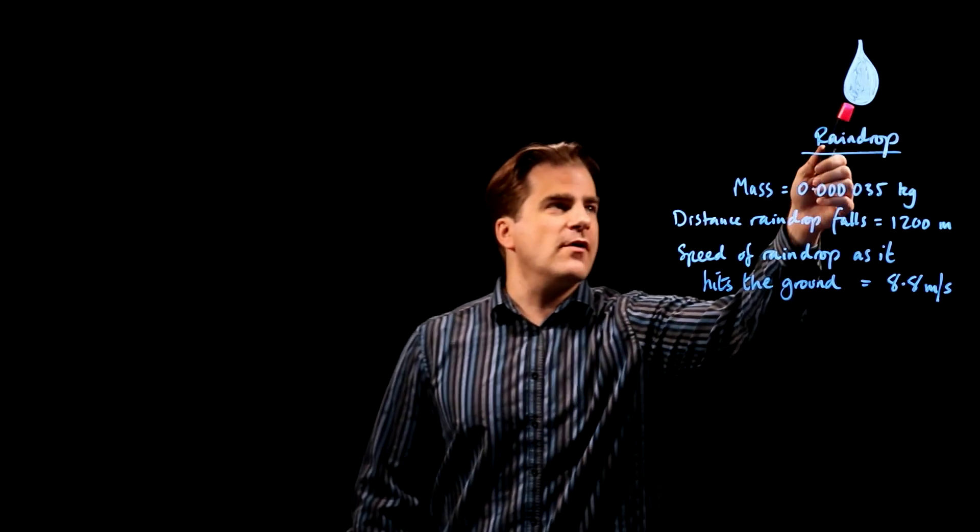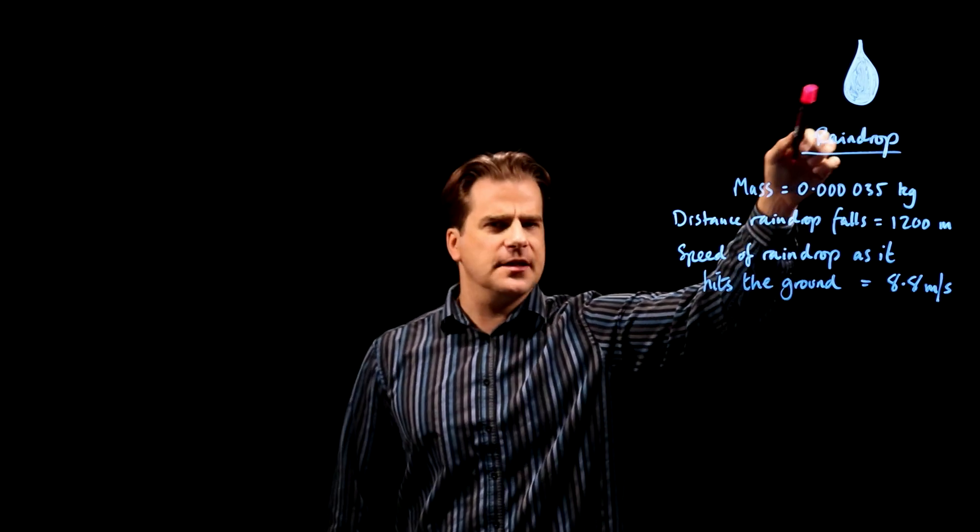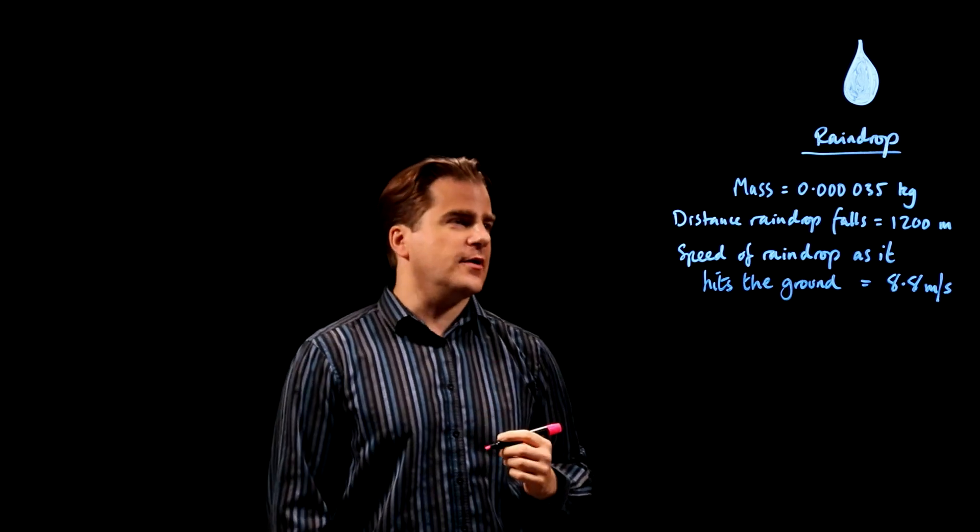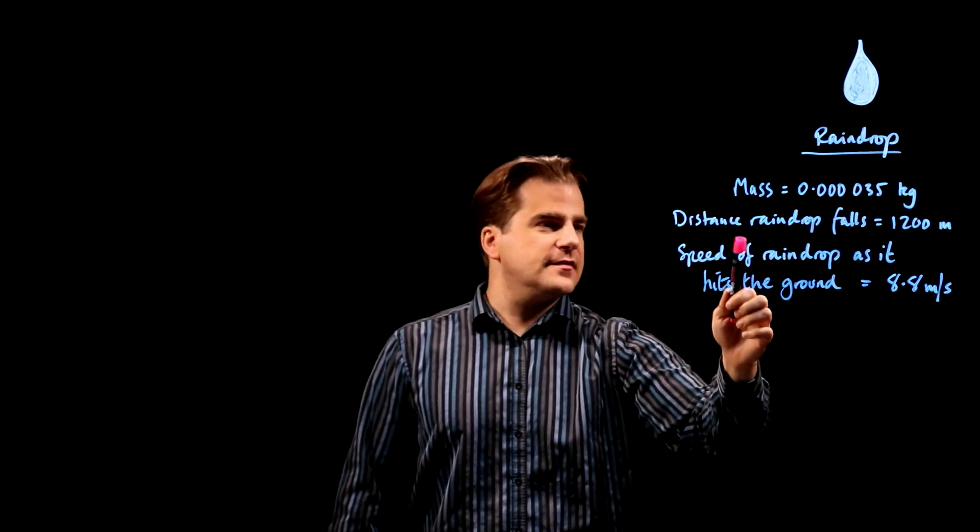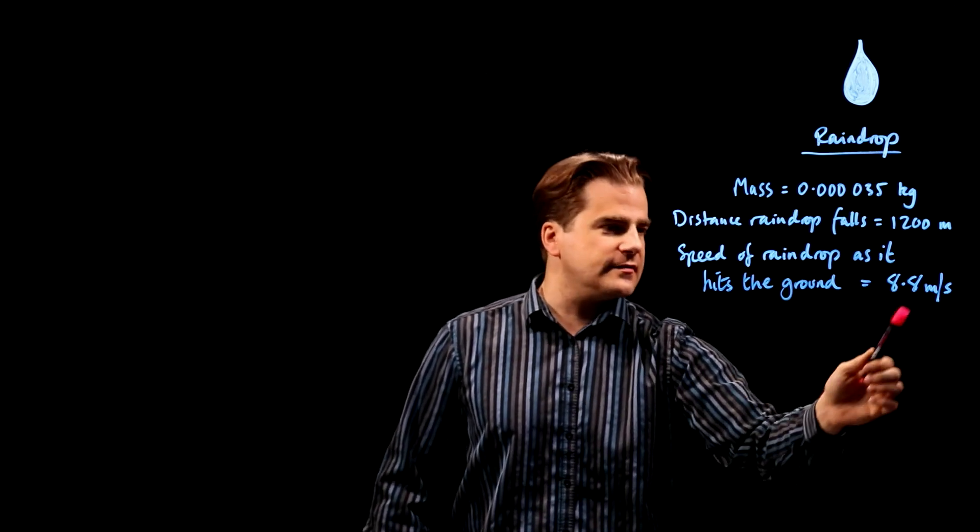Okay, we have a raindrop. You know, I suspect raindrops might not actually be that shape, I think they might be more circular. You can Google that. Anyway, the mass is that, the distance the raindrop falls is that, the speed of the raindrop as it hits the ground is that.